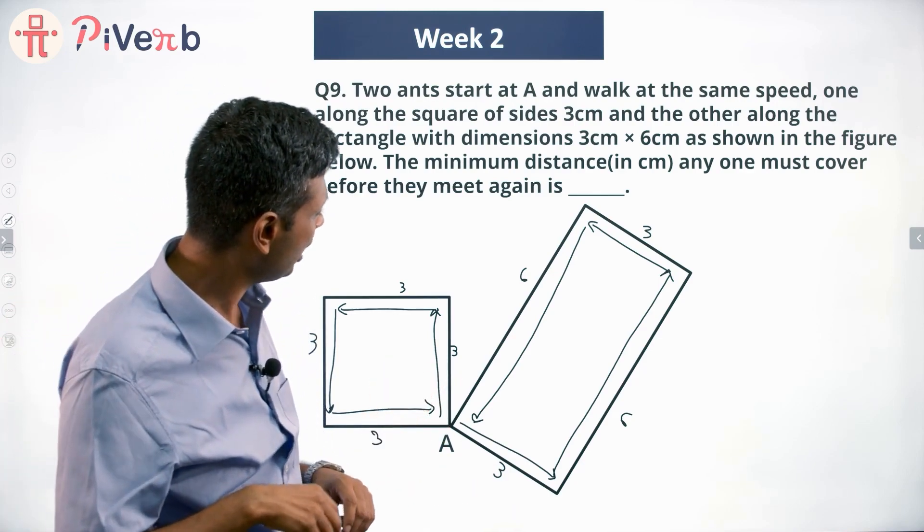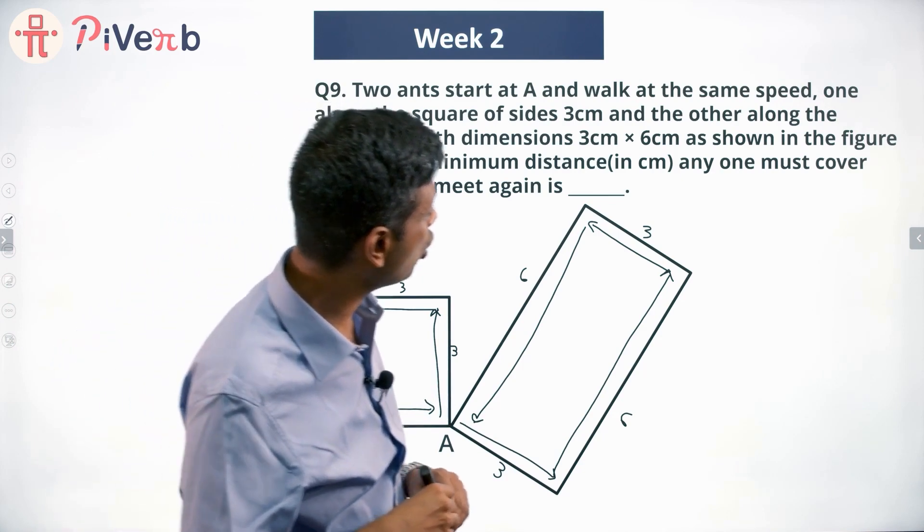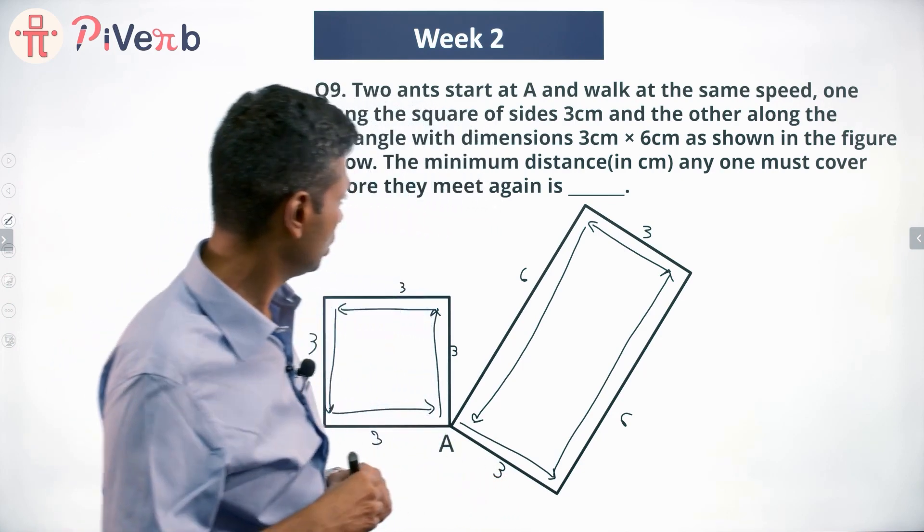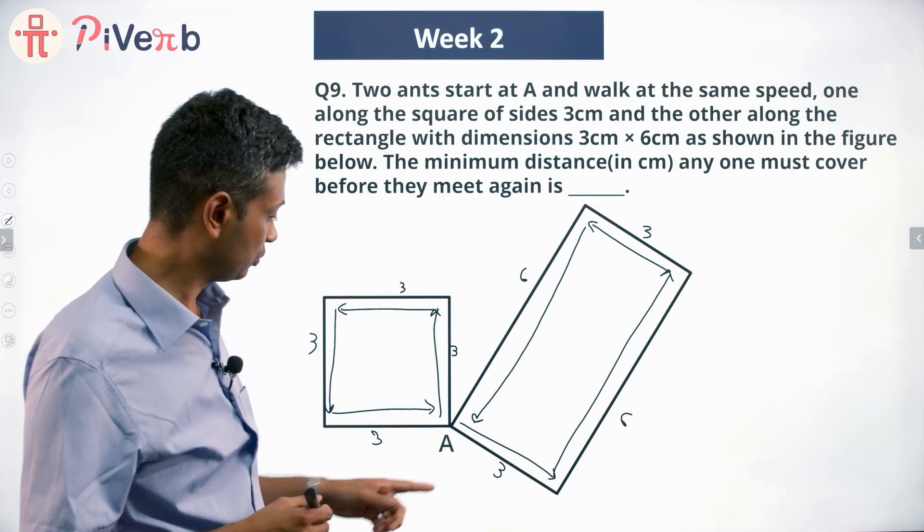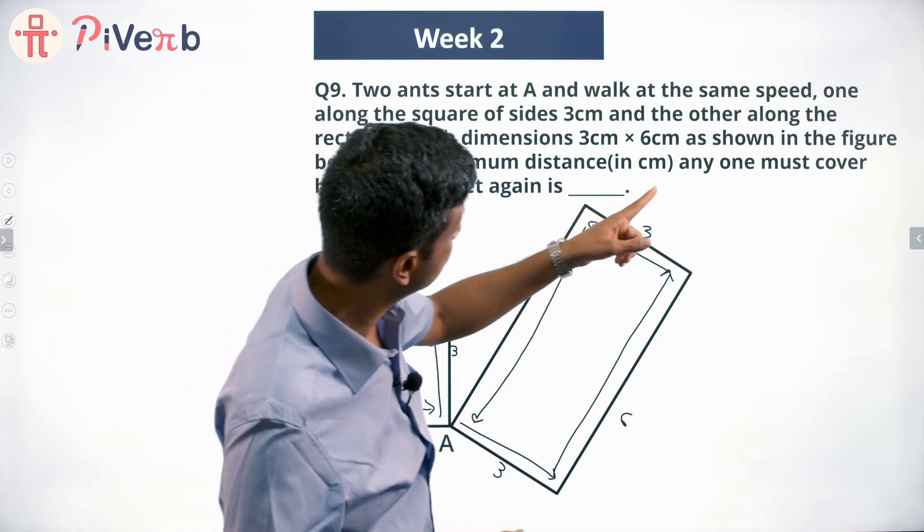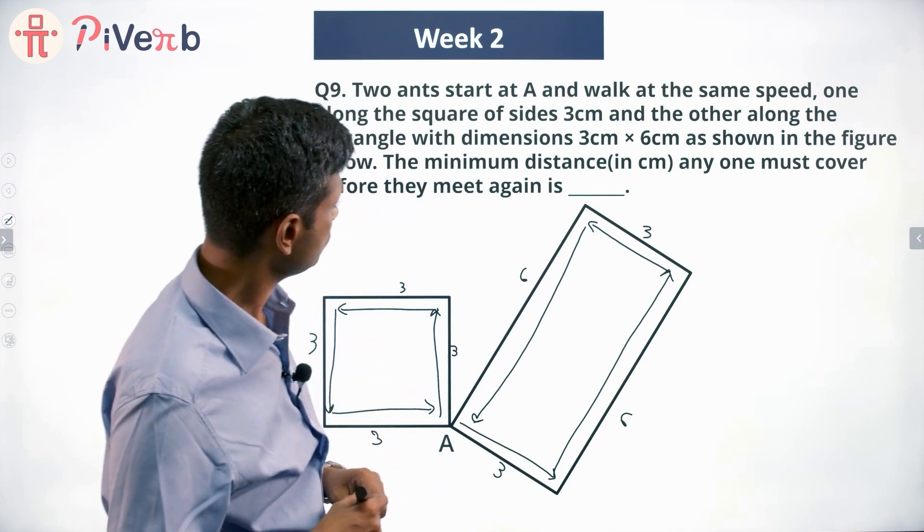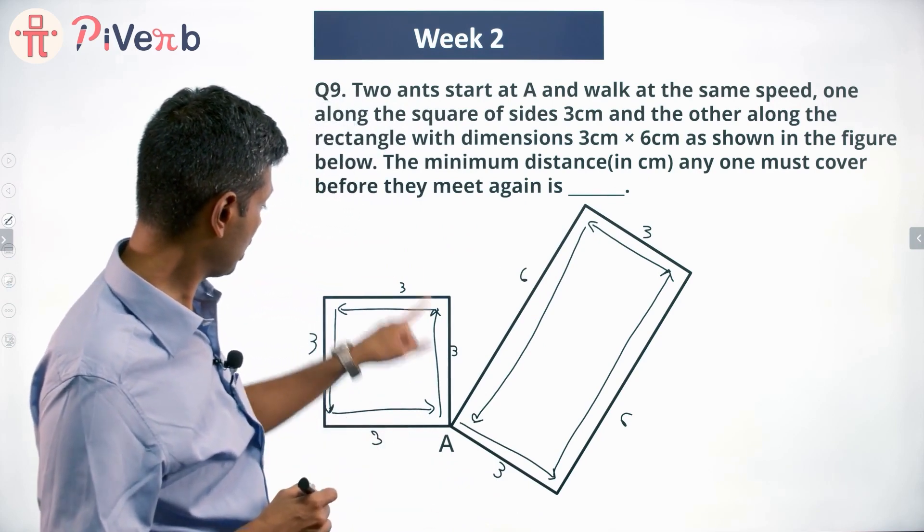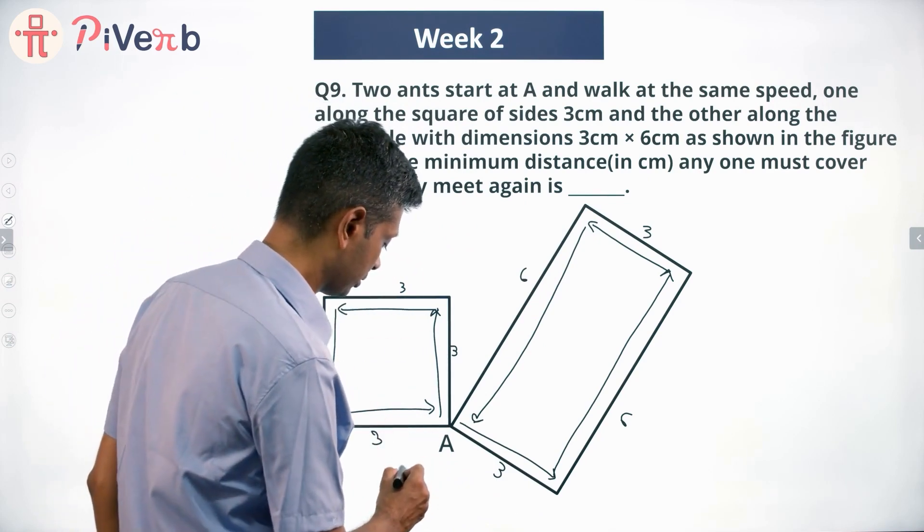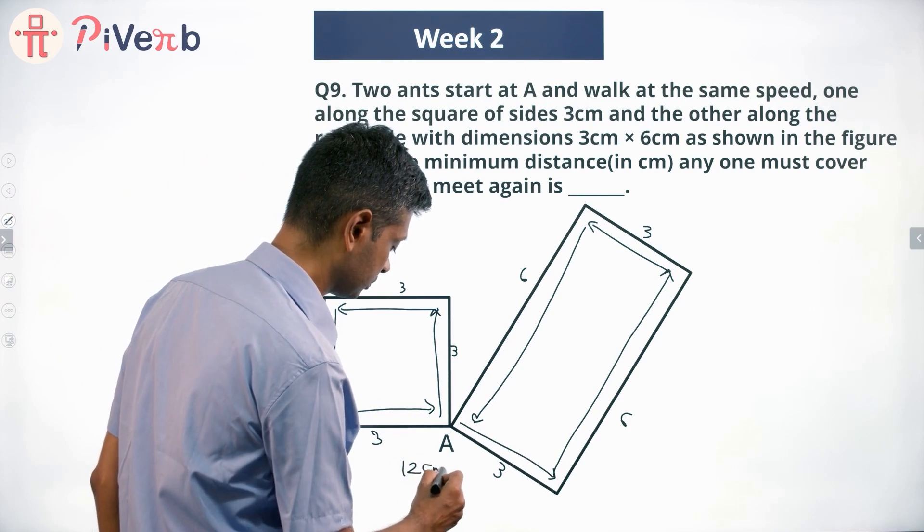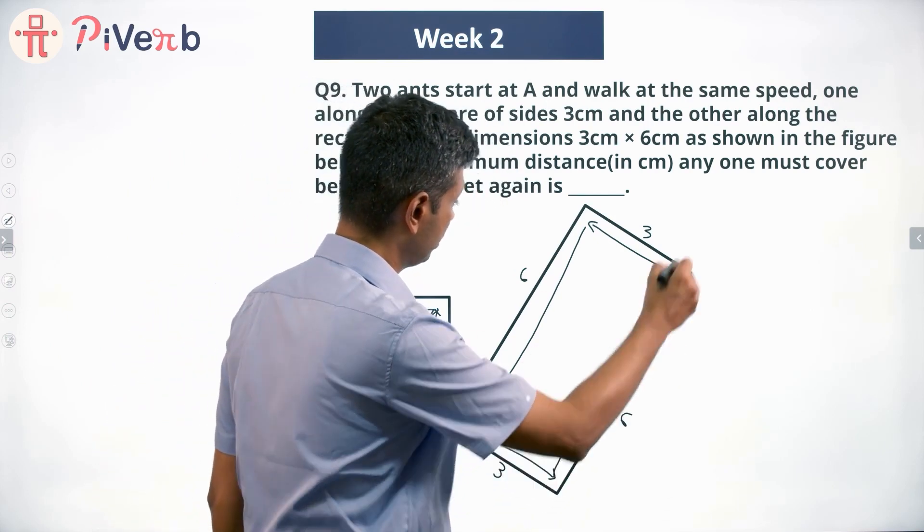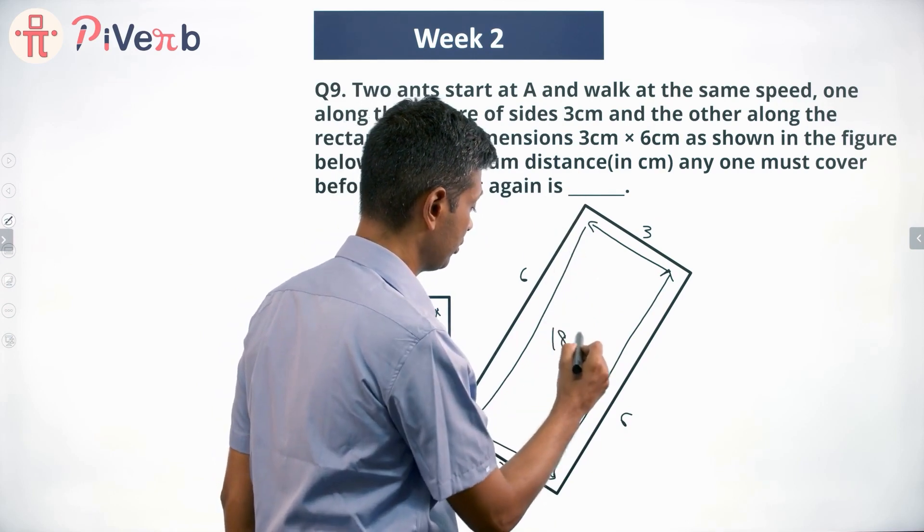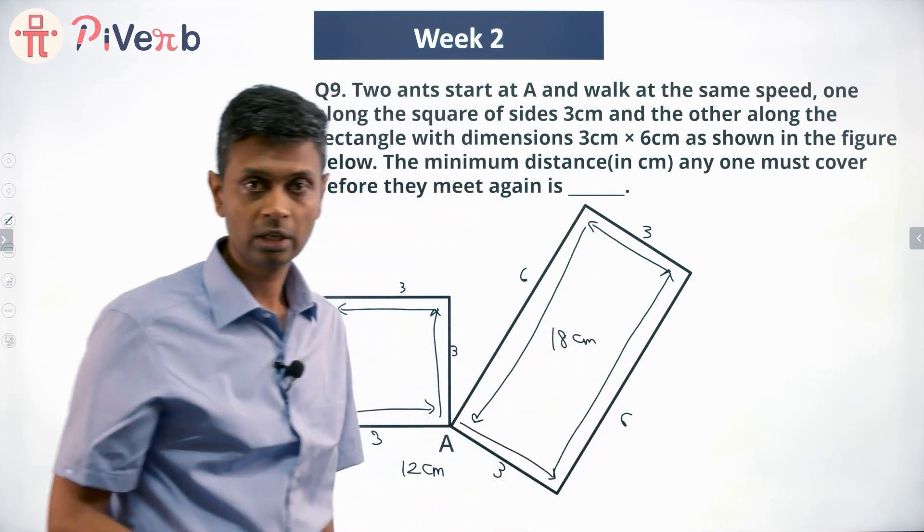Lovely. So let us think about after traveling how many centimeters will either of them come to A. The first ant will come there after covering 12 centimeters. This one will come there after covering 3 plus 6, 9, 3 plus 6, 9, 18 centimeters.